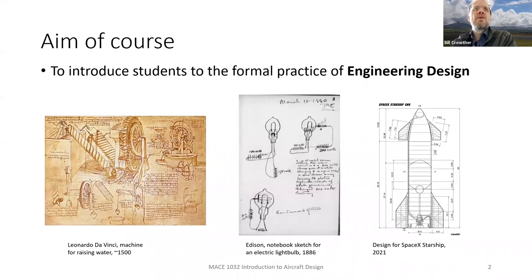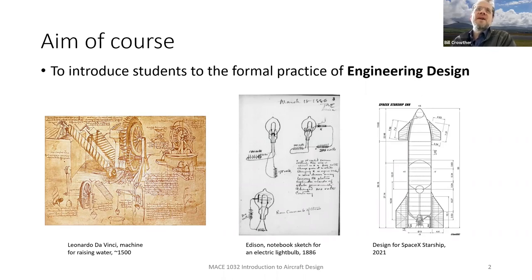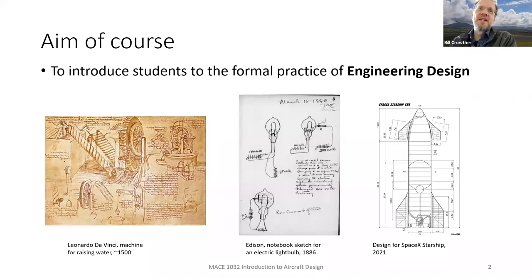Not all of Leonardo's designs were practical - he tended to design things where it often took hundreds of years before the technology was there to make them, but he had the creativity to do it. In the middle there, Edison and his light bulb - Edison invented countless things. This was a sketch from his notebook when he was working out how to make a light bulb, and his famous quote about it being 1% inspiration and 99% perspiration. Any design engineer would recognize that - you don't just sit there and invent a light bulb, you make hundreds of iterations, test it, and go back to the beginning.